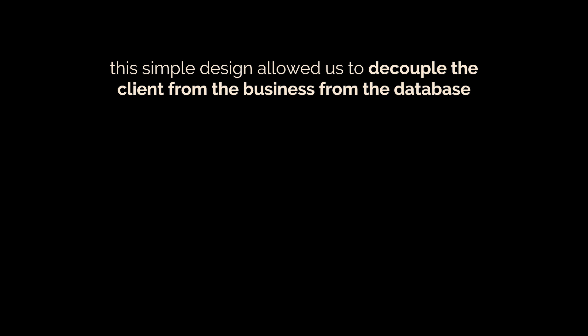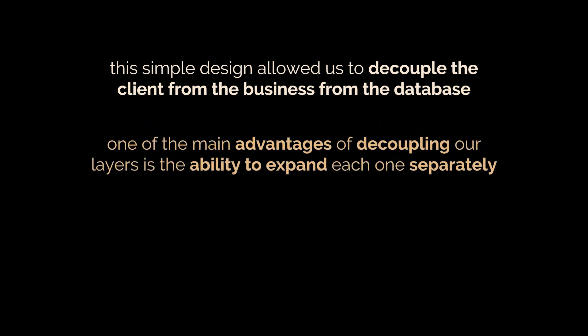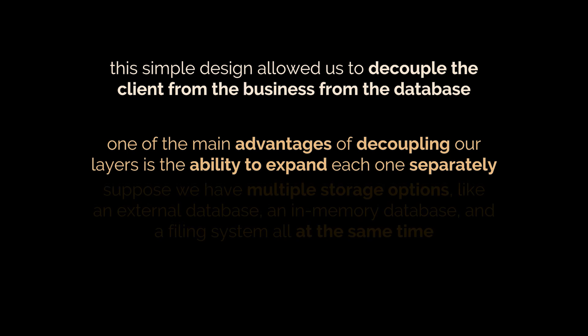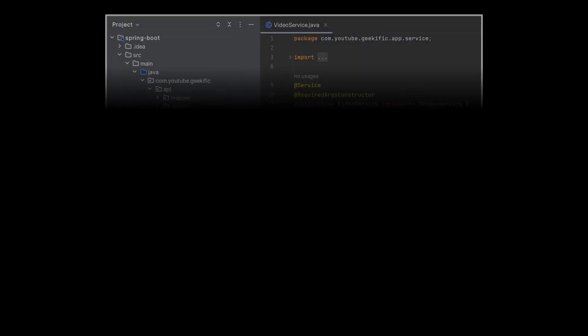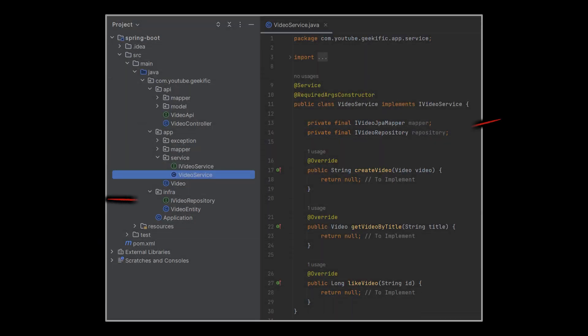But why did we do that, how can we further improve it, and what are the small catches we left out? One of the main advantages of decoupling our layers is the ability to expand each one separately. For example, suppose we now have multiple storage options like an external database, an in-memory database, and a file system all at the same time.